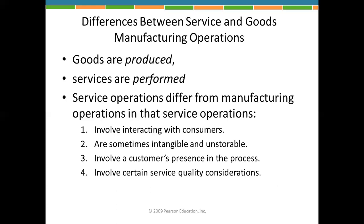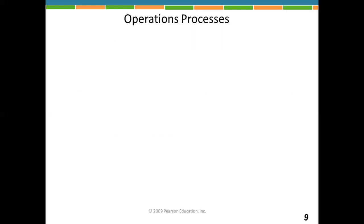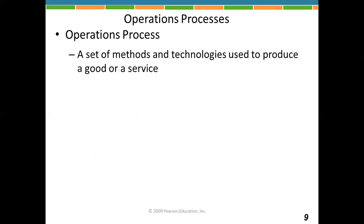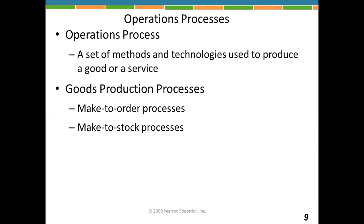The customer is involved in the service process — that is how quality of service is assessed. The operations process refers to the methods and technologies we use to build goods and services. For example, looking at a boutique, there are two types of processes: make-to-order and make-to-stock.